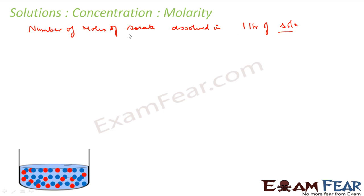So in the numerator we have solute and in the denominator we have solution. Correct. So one liter is something which is used for volume. So molarity is moles of solute per liter of solution, denoted by M, capital M.